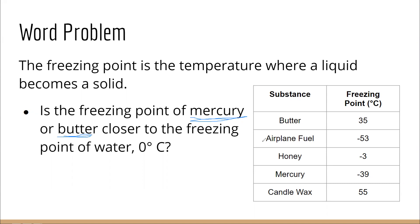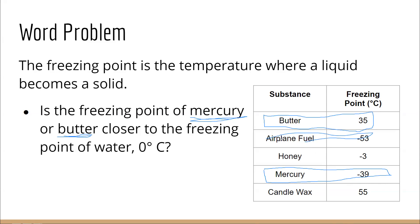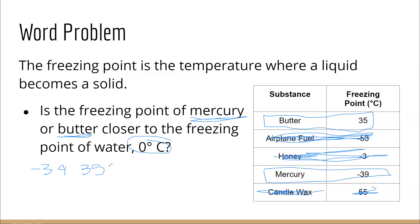I need to know what the freezing point of mercury is and what the freezing point of butter is. Thankfully, they provided us with a table so we can look that up. The freezing point of mercury is negative 39 degrees Celsius. The freezing point of butter is right at the top of our table at 35 degrees Celsius. The rest of the information — airplane fuel, honey, and candle wax — don't matter, so I'm going to cross that out. So I know that I'm going to be working with negative 39 and positive 35, and our reference point is zero.